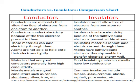Examples of conductors are metals: copper, aluminum, silver, iron, and others. For insulators, common examples are rubber, glass, ceramic, plastic, asphalt, pure water, and so on.